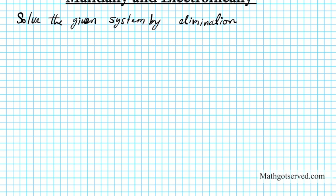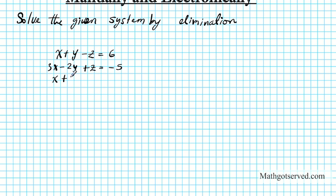The system we're going to solve is the following. Equation 1 is x plus y minus z equals 6. Then we have 3x minus 2y plus z equals negative 5. And x plus 3y minus 2z equals 14. I like to number my equations so I can stay organized and reference them. So I'm going to call them equation 1, equation 2, and equation 3.